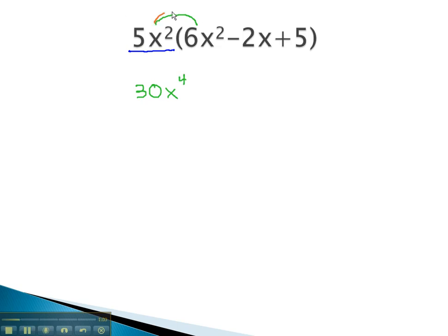Continuing to distribute, the 5x² goes on the negative 2x. 5 times negative 2 is negative 10, and we add the exponents, giving us x³, because of the invisible one on the x.